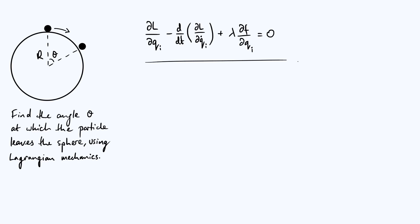I've put at the top here a differential equation which you may recognize the first two terms of: dL/dq_i minus d/dt of dL/dq_dot_i — that looks very much like the standard Euler-Lagrange equation from Lagrangian mechanics, where L is the Lagrangian and q_i are your generalized coordinates. There's also a third term, plus lambda times df/dq_i. This term has to appear in our equations of motion to ensure the particle is constrained to move along the surface of the sphere — it prevents the particle from falling through the surface.